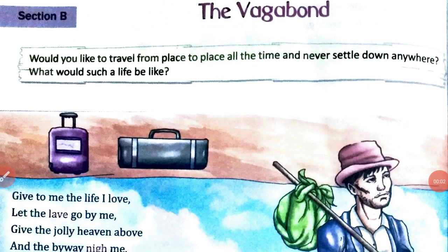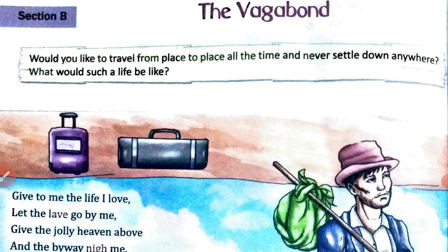Hello students, welcome to CG Board Online Classes. So today we are going to start Section B, The Vagabond. It is from your book Class 7th, My English Garden, Unit 5 Travel. We had started Unit 5 Travel, and Section A — Childhood Memories — we have done. So in this video, we are going to start Section B of Travel, that is The Vagabond.